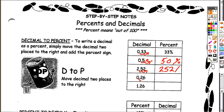26 hundredths becomes 26 percent, and 1 and 26 hundredths becomes 126 percent.